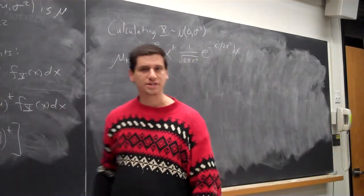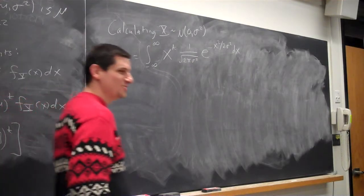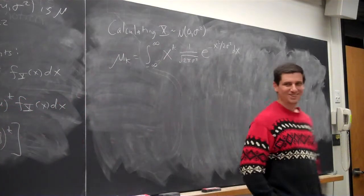Which k can you do easily? So which k can we do without too much trouble? One. Zero. Zero. Okay, k equals zero is no problem. It's just one. What other k can we do? One.